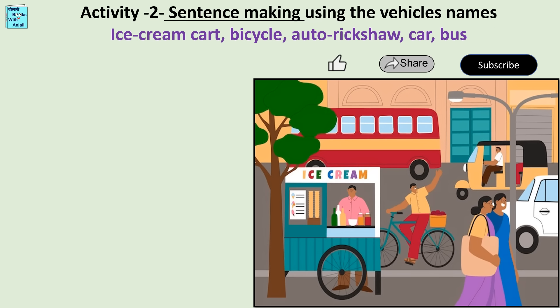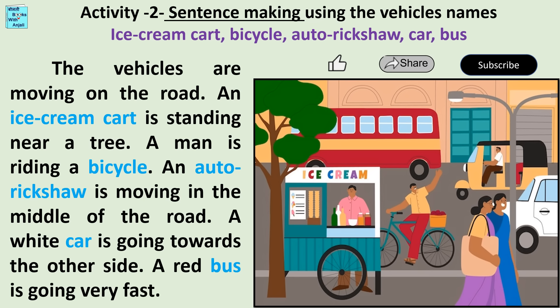Activity 2 is sentence making using the vehicle names. The vehicles are moving on the road. An ice cream car is standing near a tree.